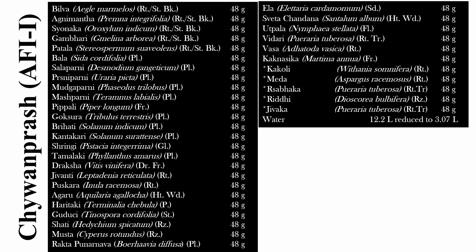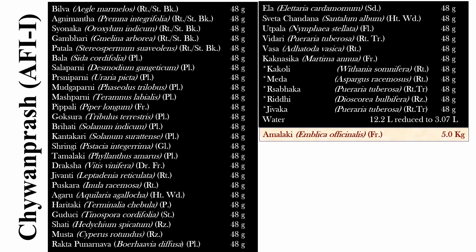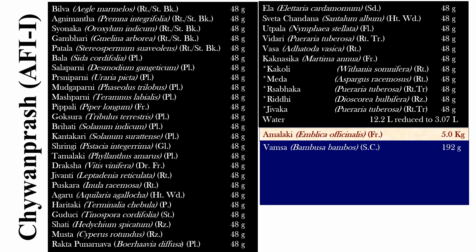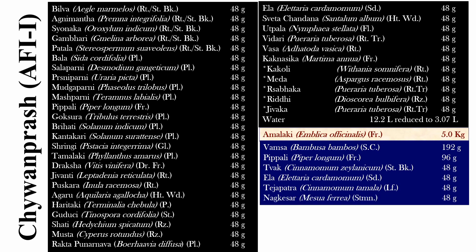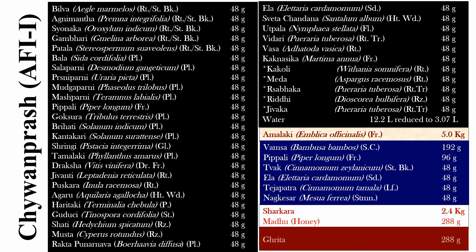In Chyawanprash, the Kalka Dravya includes Amla Pisti. The Prakshepa Dravya include Mamsa i.e. Twak-saraka, Pipali, Twak, Ela, Tejpatra, and Nagakeshara. The Madhura Dravya i.e. sweetening elements in Chyawanprash are sugar and honey. And the Sneha Dravya here are Ghrita and Tila Taila.